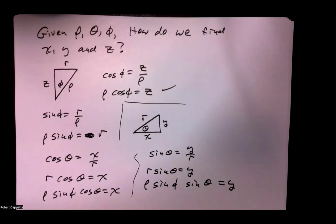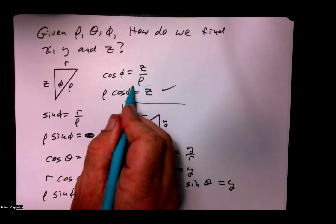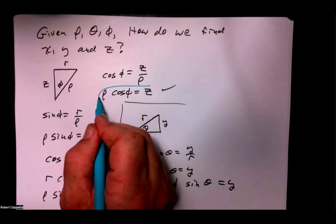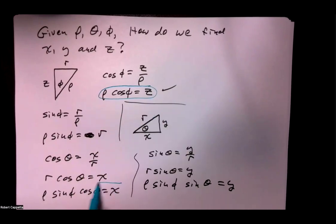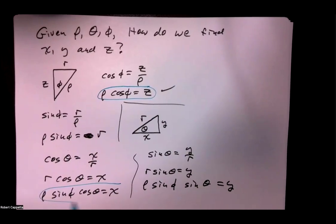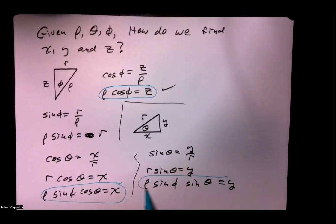So if we start with rho, theta, and phi, we can compute z as rho cos phi, x as rho sine phi cos theta, and y as rho sine phi sine theta.